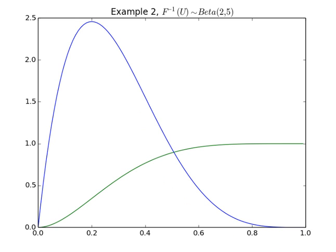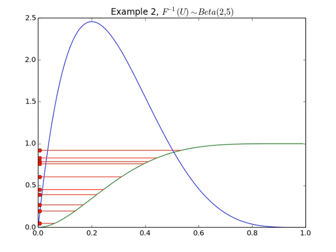So what we do is we produce 10 random data points from the uniform(0,1), draw lines across until they hit our CDF, and then drop lines down, and then we get these data points.